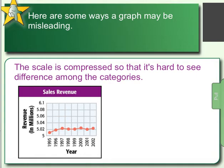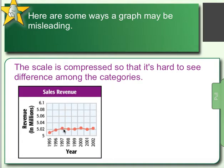Our next way that graphs can be misleading is the scale is compressed, so it's hard to see the difference among the categories. We don't have any data at the top — all our data is within two rows, from 5 to 5.04 million in revenue. From 1995 to 2002, it looks like a pretty steady company. But if we were to graph this fully, we would see significant dips, like from 1997 to 1998 or 2000 to 2001 — potentially hundreds of thousands of dollars. This could be used by a company that wants you to invest and wants to hide those big dips in revenue.